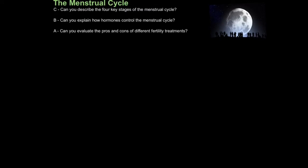I've put a picture of the moon up here because the lunar cycle is 28 days, and coincidentally, so is the menstrual cycle. For that reason, some people believe there's a sort of spiritual link between the lunar cycle and the menstrual cycle.